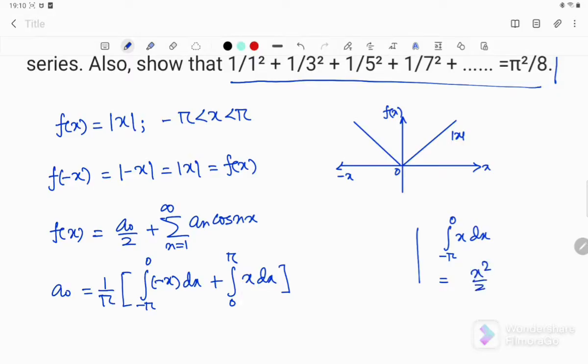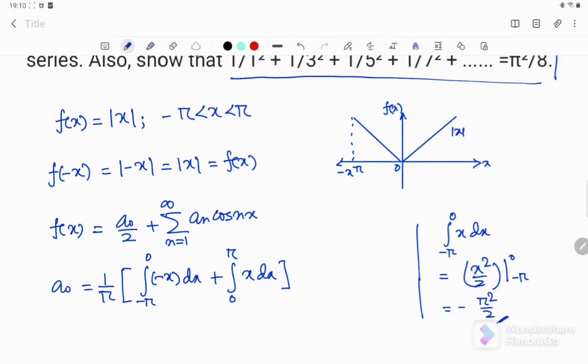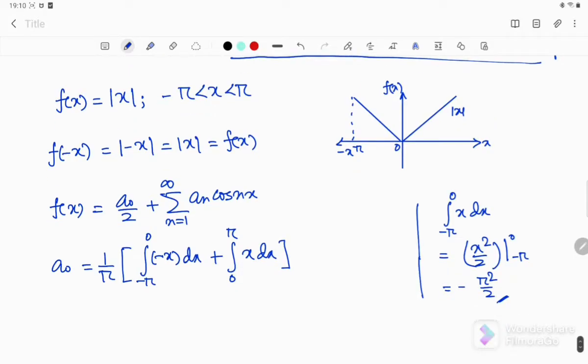So x square by 2, 0 minus pi, that is basically minus pi square by 2. So you can see that in this region, 0 to minus pi, I am getting minus value. However, mod x should be positive. So this is one simple reasoning why I have used this minus x here.